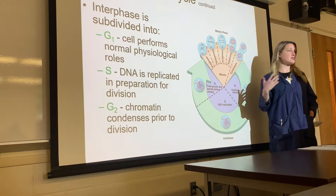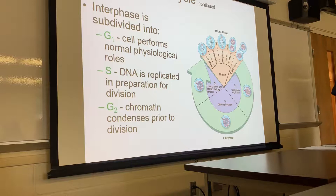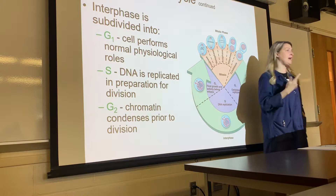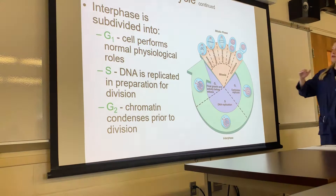Mitosis is the process by which almost all of the body's cells divide, with a few exceptions. Red blood cells have no nucleus and therefore no chromosomes, so they can't go through the S phase and don't divide. Sperm cells and egg cells have their own process — meiosis — which we'll talk about later. All other cells of the body undergo mitosis.